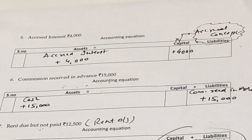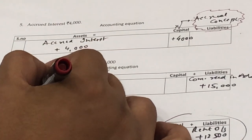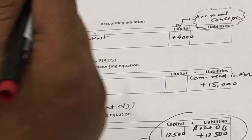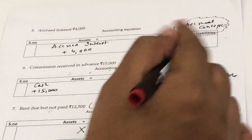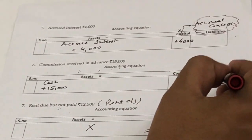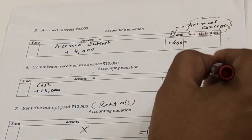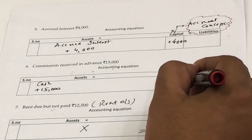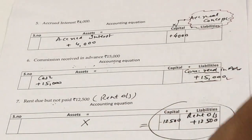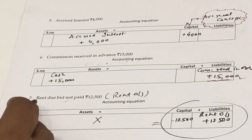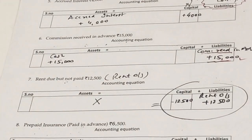Next transaction: commission received in advance of 15,000. Here we have received the money but have not yet rendered the service, so it is a liability for the business. Cash is added 15,000 and on the liability side we open a new column — commission received in advance — as a liability.